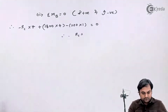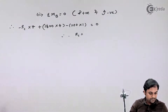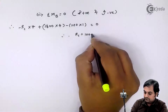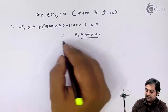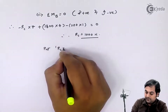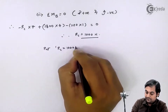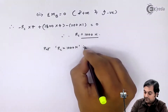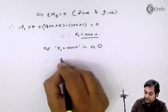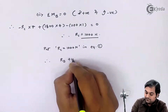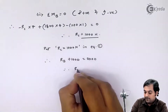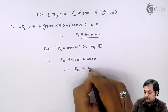Then 200 Newton acts downward producing an anticlockwise moment, so minus 200 into 1 equals 0. Solving these terms, RC comes out to be 1000 Newton. Substituting RC equals 1000 Newton into equation 1, I have RB plus 1000 equals 2000, therefore RB also equals 1000 Newton. So I have now obtained both reactions.